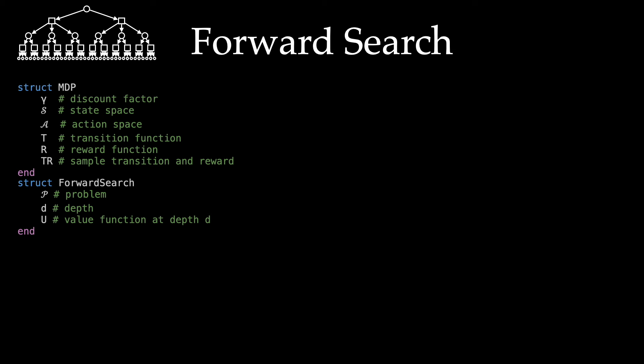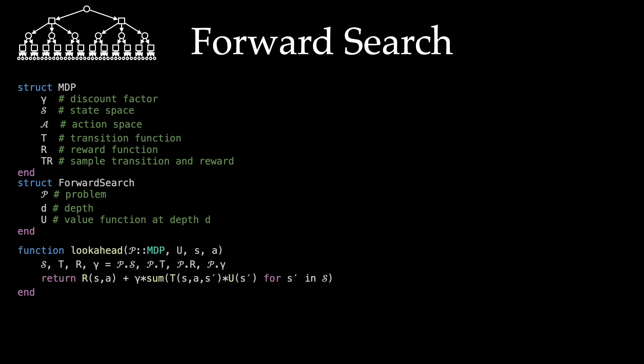We need another struct representing the forward search algorithm itself, taking in the problem as an instantiation of an MDP struct, the depth we're building the tree to, and U — the value function estimate at depth D, i.e., what we return as the value function estimate at the base of the tree. The look-ahead function takes a problem of type MDP, the utility estimate, a specific state, and a specific action, then returns the look-ahead function we've seen before.